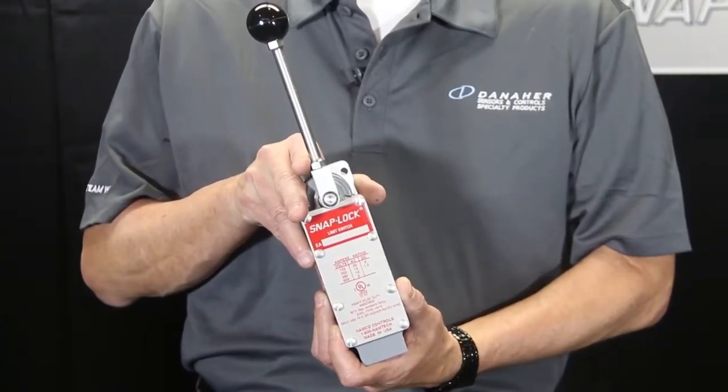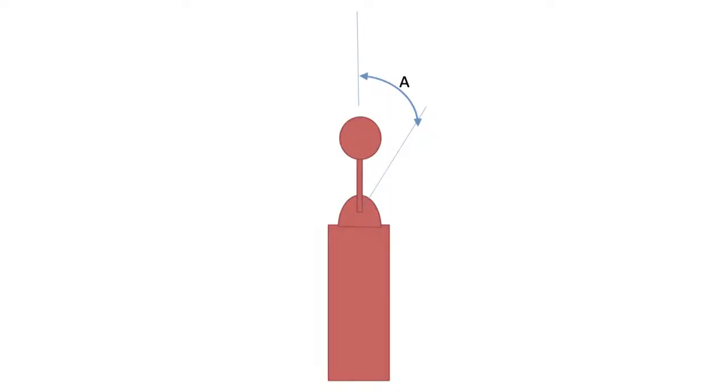Picture a lever sticking straight up from a limit switch. Trip angle is the distance that the lever needs to travel to cause the contacts to transfer.